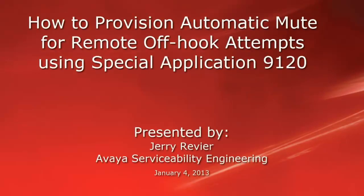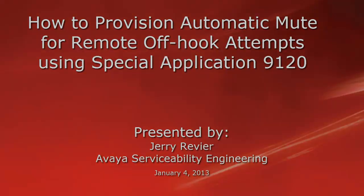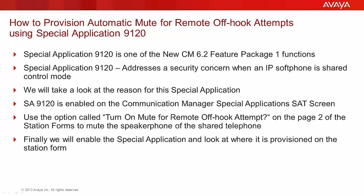Greetings, this is Jerry Revere with the Avaya Serviceability Engineering team. We'll be looking at the new Communication Manager 6.2 Feature Package 1 Special Application 9120, called Automatic Mute for remote off-hook attempts. This video will briefly explain the Communication Manager Special Application 9120, which provides a method to overcome a perceived security concern. This is a new feature functionality being delivered by the Communication Manager 6.2 Feature Pack 1 release.